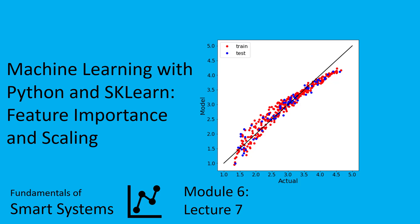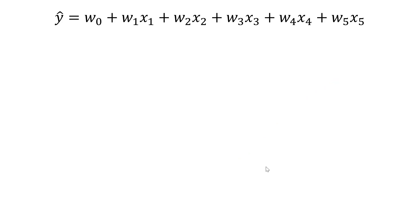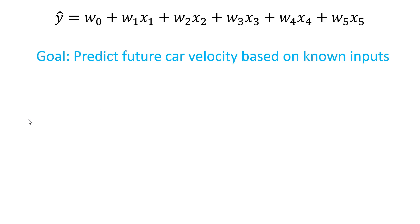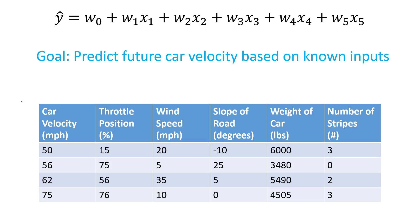I want to revisit this example from the introductory video. If our objective is to build a machine learning model of this form — this is the linear version of it — we want to predict our future car velocity based on known inputs. We've covered how to make this model have nonlinear features where you take your input and do some algebraic manipulations before doing the machine learning. That's still totally in play, but I wanted to give this hypothetical example.